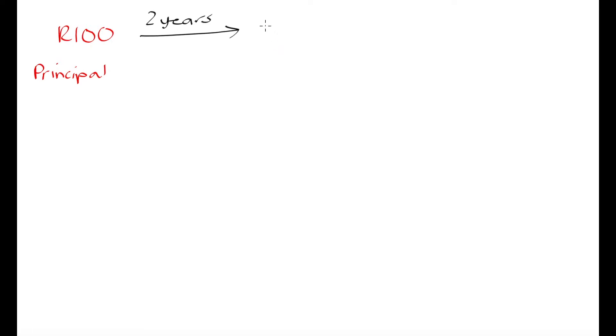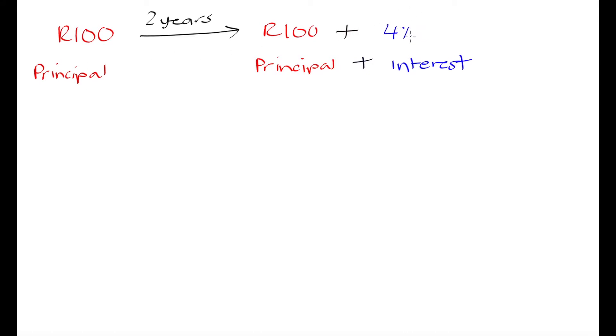Now let's say instead of agreeing to pay back after one year, the bank told you they want the money back after two years. How would we calculate that? Let's start by writing down our principal: 100 Rand. After two years, the bank will want the principal back, plus interest — in this case four percent simple interest per annum, which again means per year.